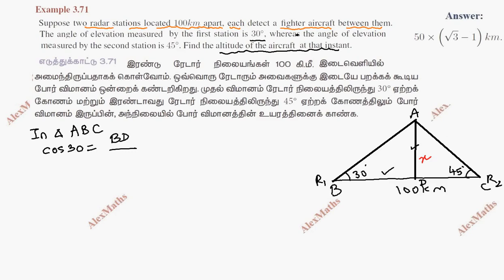Using tangent: tan 30 equals the opposite side AD divided by BD. Tan 30 is 1 by root 3, equals x by BD. If you cross multiply, BD equals root 3x.